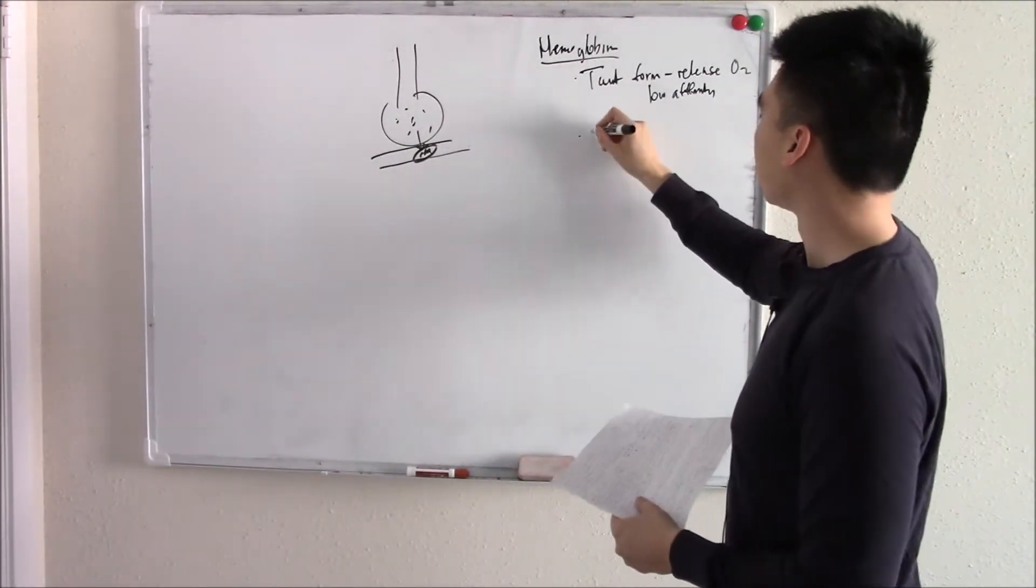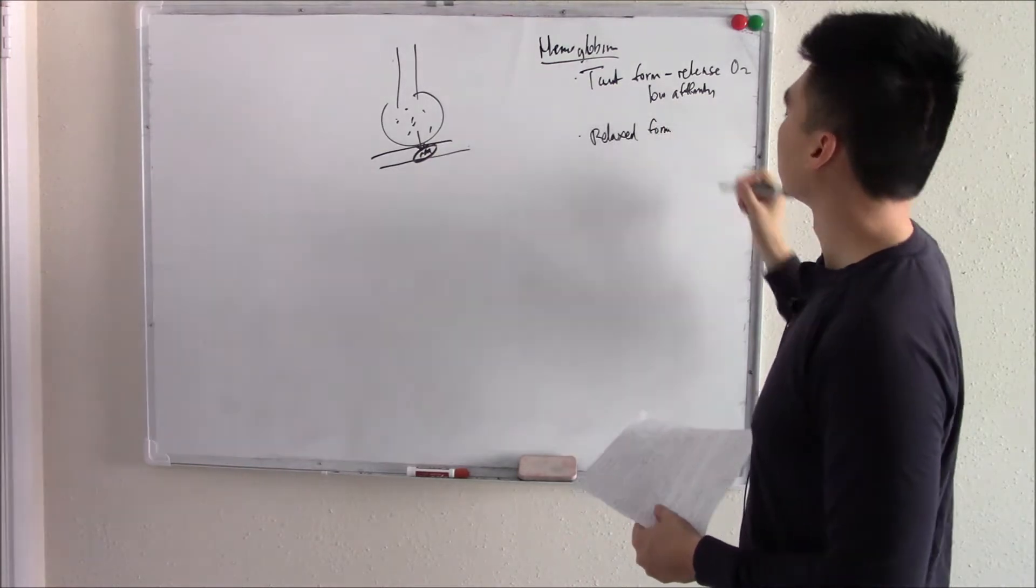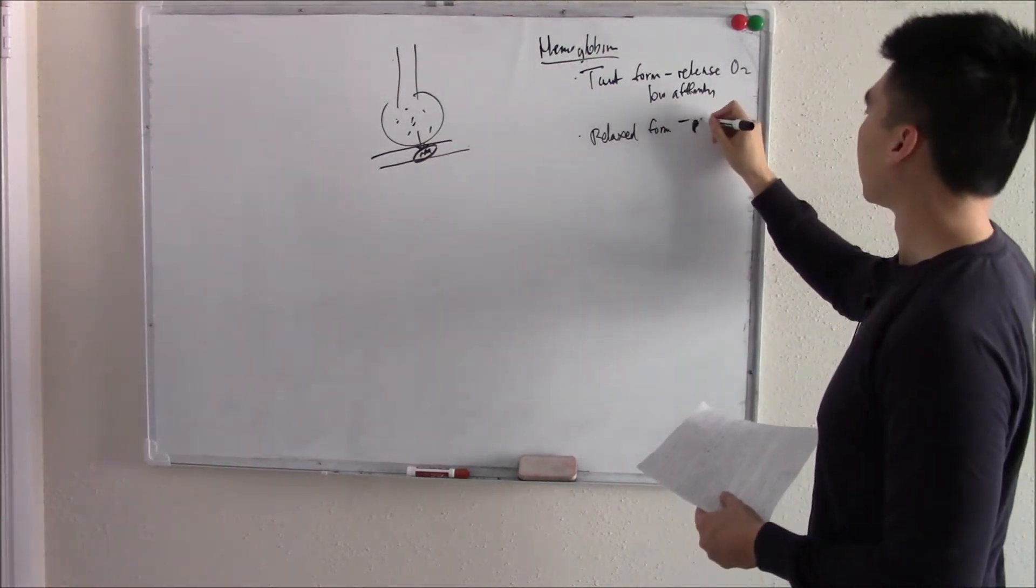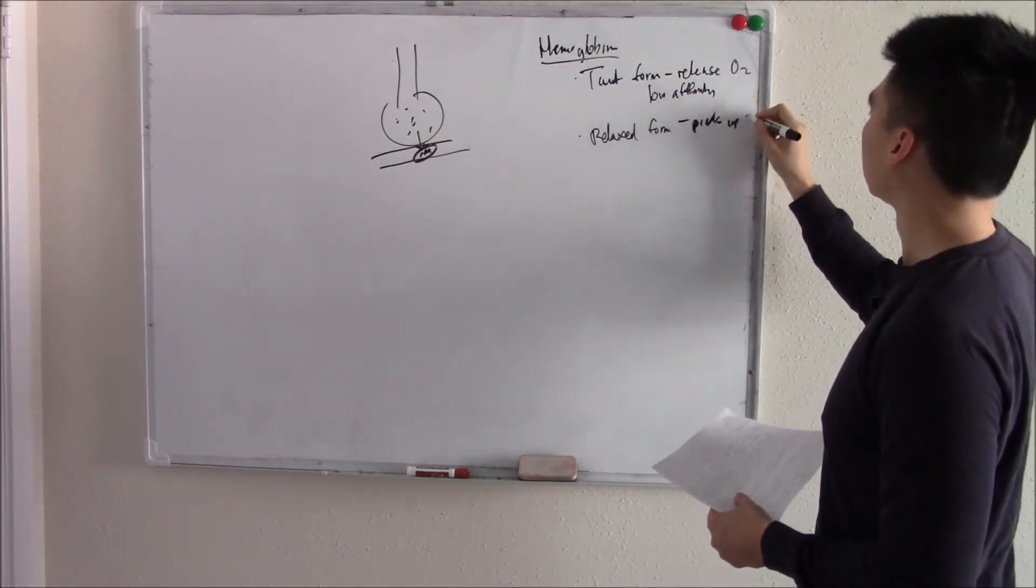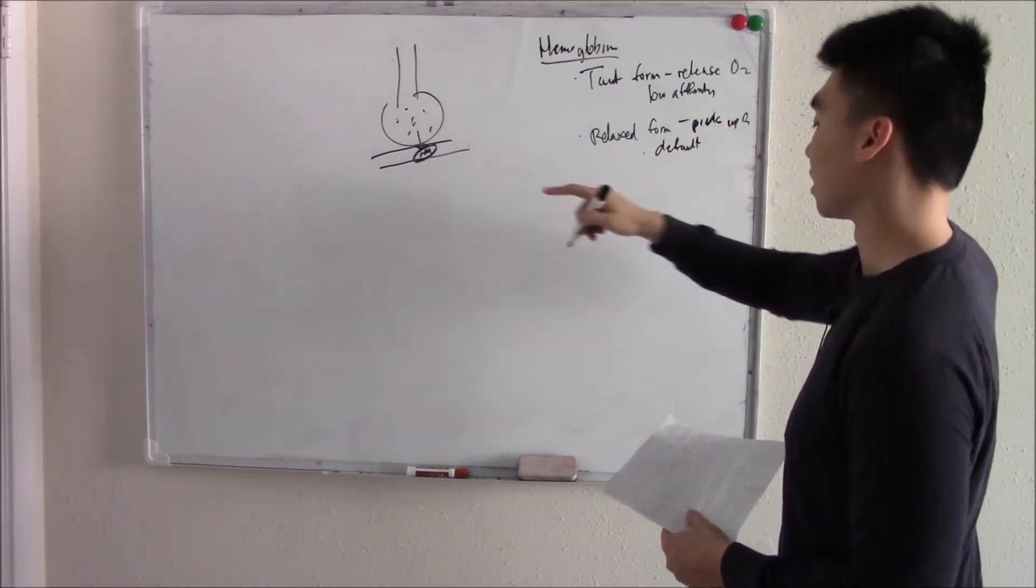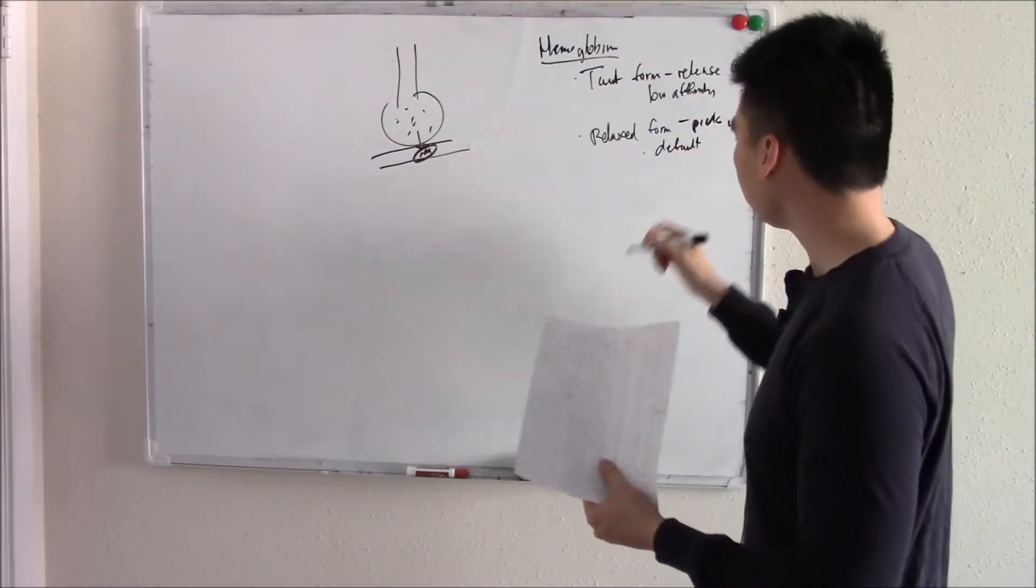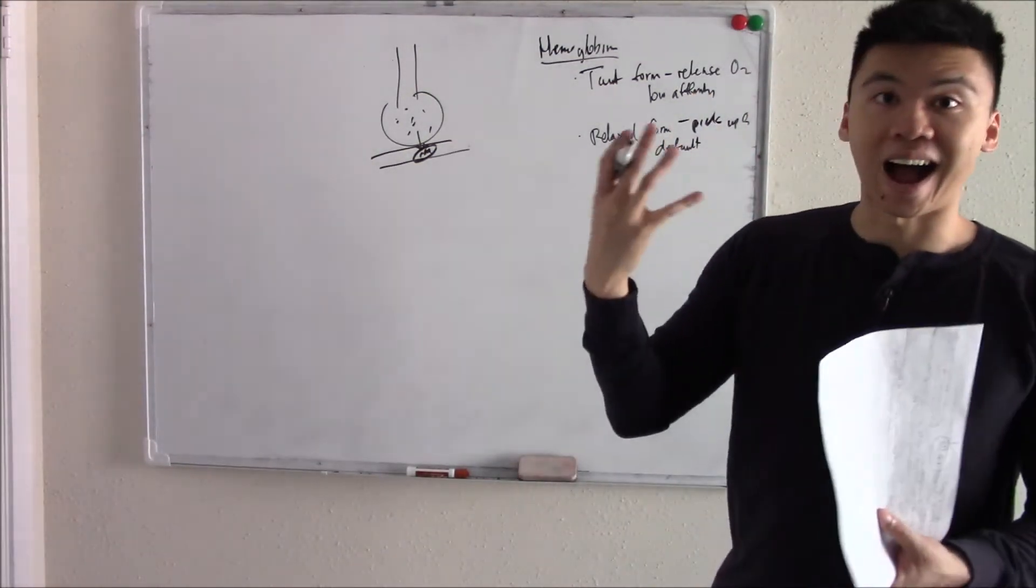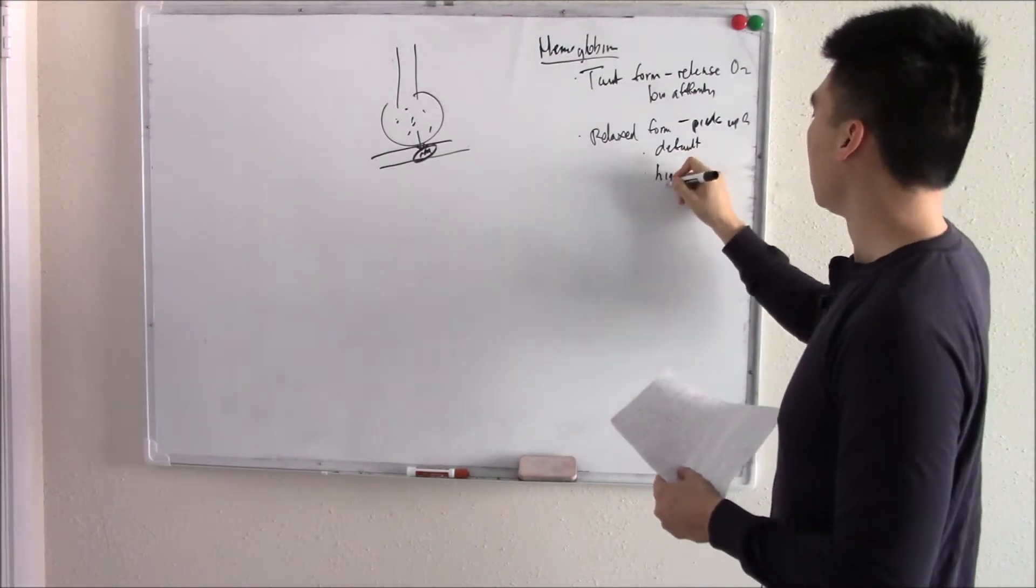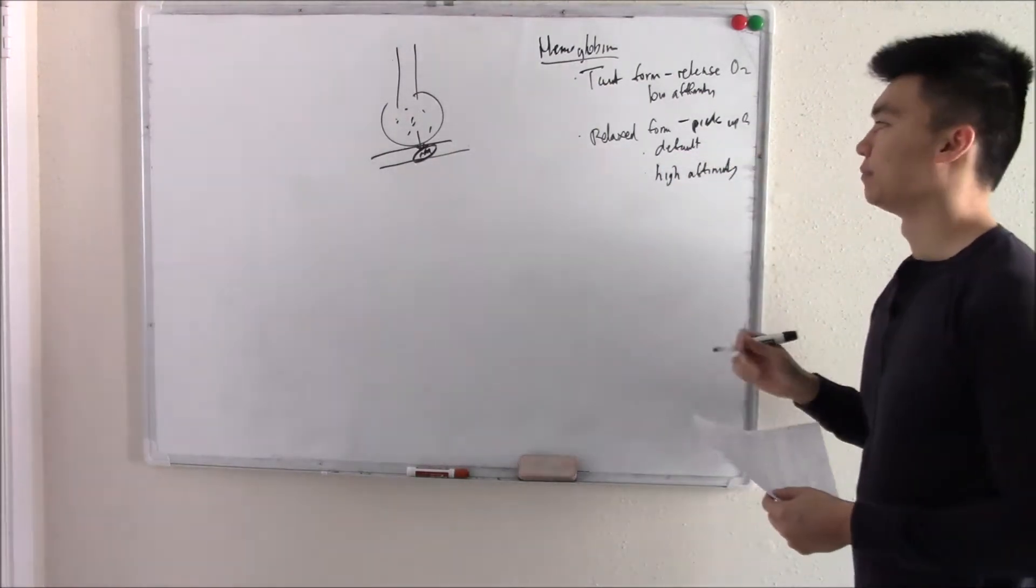The second form is the relaxed form. The relaxed form loves to pick up O2. This is usually our default form. Usually your red blood cells are circling around your blood in this form, wants to pick up oxygen. A fancy way of saying this is that it has a high affinity for oxygen. It really, really likes to bind oxygen.